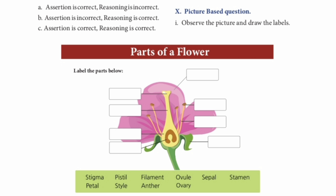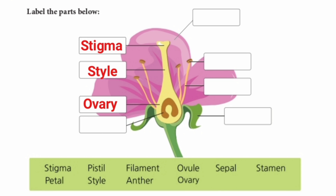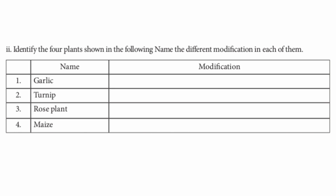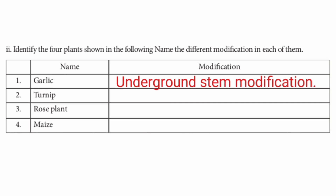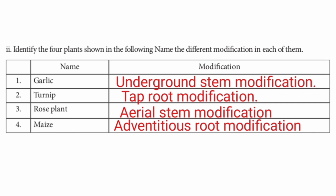Parts of a flower: label the parts. A picture of a shoe flower is given. The tip is stigma. Next, the tube-like portion is style. The lower swollen part is ovary. Inside the ovary, the brown colored portion is ovule. The pink colored portion on the right side of the flower is petal. The brown and yellow colored portions at the base — the brown part is anther and the yellow part is filament. The green colored portion at the base is sepal. Question 2: Identify the 4 plants and name their modifications. 1. Garlic — underground stem modification. 2. Turnip — taproot modification. 3. Rose plant — aerial stem modification. 4. Maize — adventitious root modification.